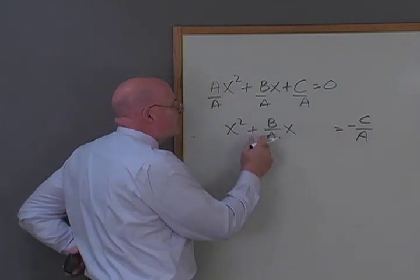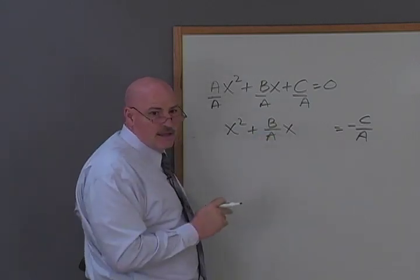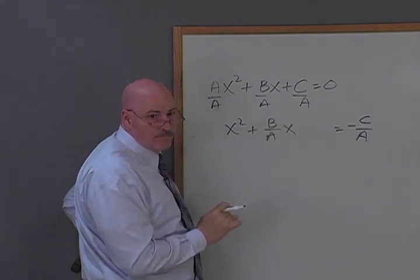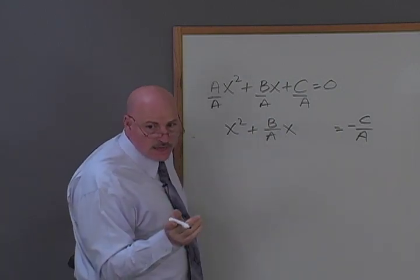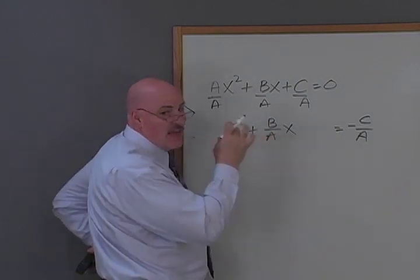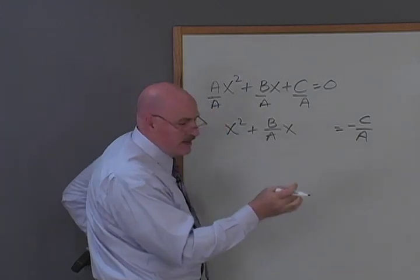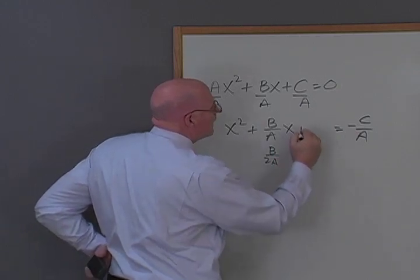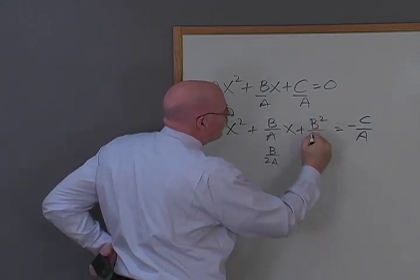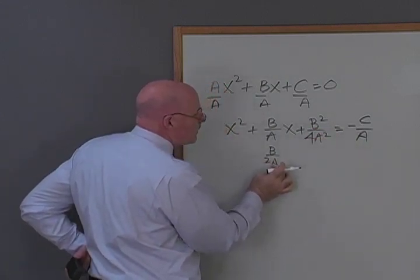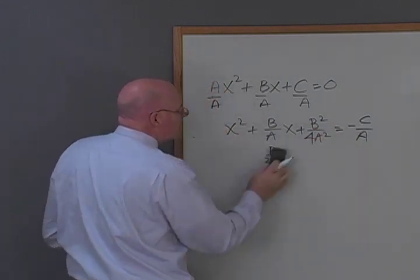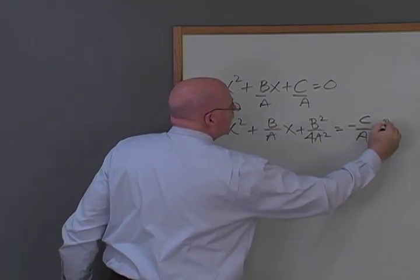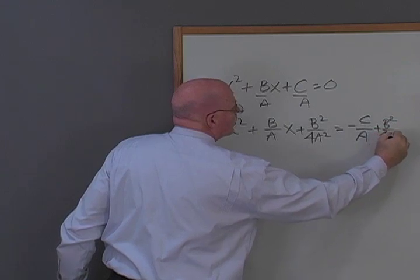Now, I've got to find what's half of b over a? If I multiplied one half times this whole thing here, what would I get? b over 2a. But, what I want to do is take half of it and then square it. So, b over 2a squared would be b squared over 4a squared, because I square the 2 and I square the a. But, I can't add it to one side without adding it to both sides. So, I have b squared over 4a squared over here.